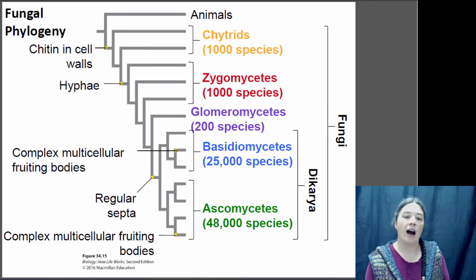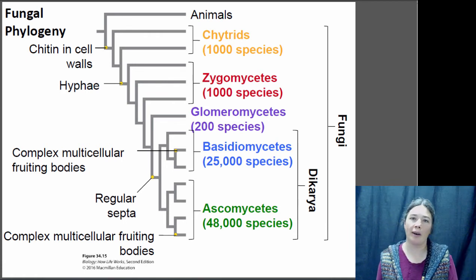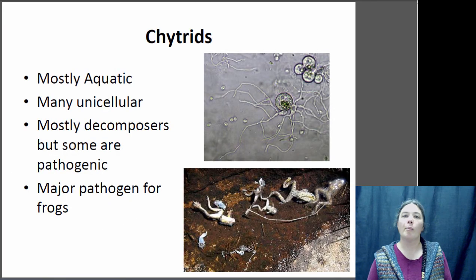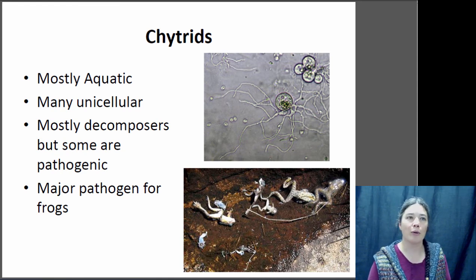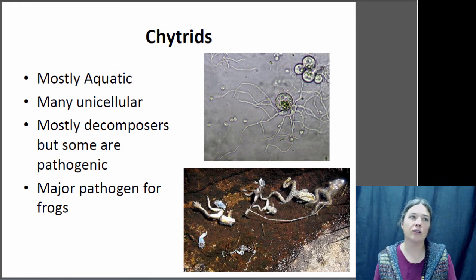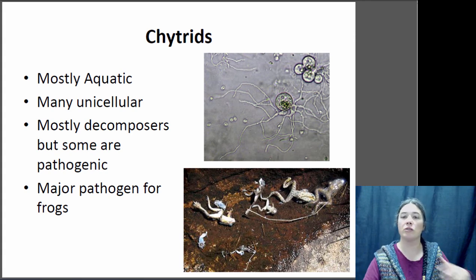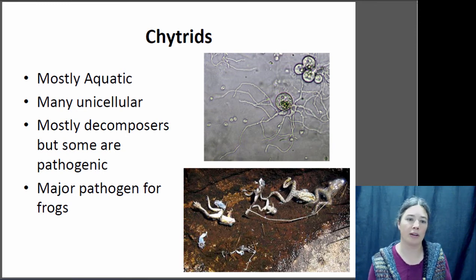There are five major groups of fungi. Starting with the chytrid fungi: most are aquatic, many are unicellular, and most are decomposers, but some are pathogenic. Chytrid fungus is causing a conservation crisis in frog populations — particularly in the tropics, it has probably already caused several extinctions of frogs. Researchers have been going out before the fungus infects a particular environment, gathering up frogs and bringing them into captivity so that if the fungus wipes out a population, they still have some in captivity. It's a hot topic in amphibian conservation.